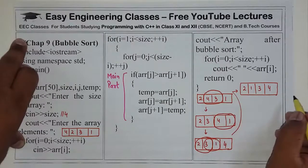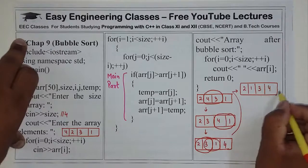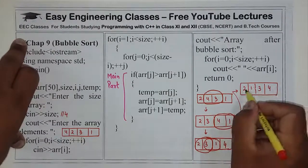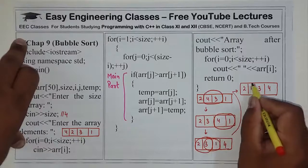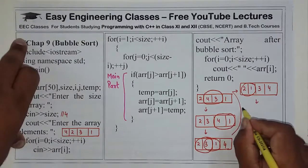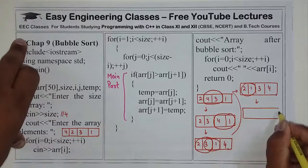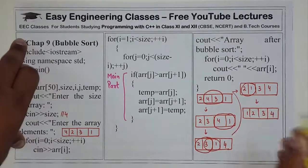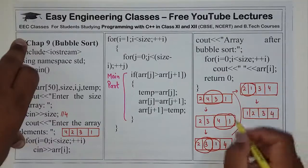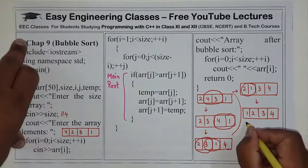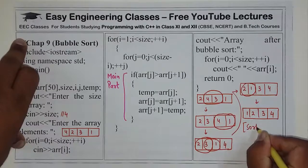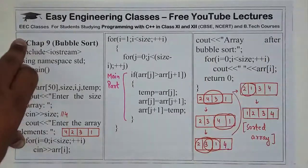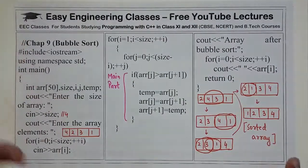ठीक है? अब किसका comparison होगा? इन दोनों में कोई interchange की जरूरत नहीं. दुबारा से इन दोनों में interchange की जरूरत है. So: 1, 2, 3, और 4. और अब देख रहे हो कि इसमें बाकी कोई भी interchange की जरूरत नहीं है. This is the final sorted array.